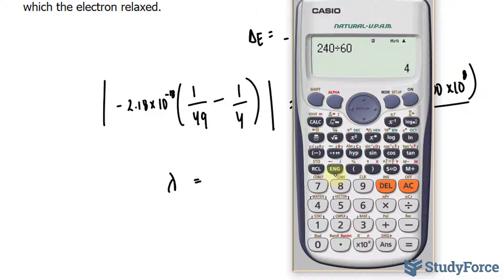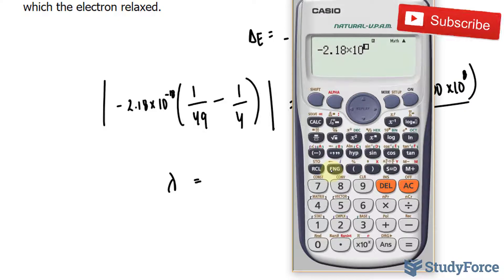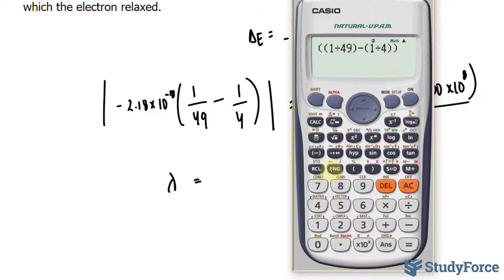If the number is negative, it just makes it positive. So we have negative 2.18 times 10 to the power of negative 18, multiplied by 1 over 49, minus 1 over 4. And I'll multiply this to the answer that we just found, and we end up with 5.005.